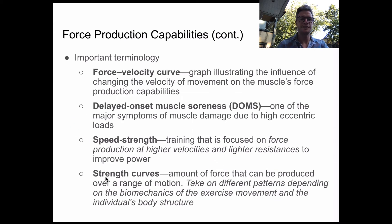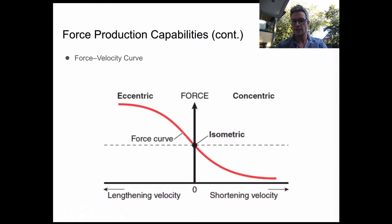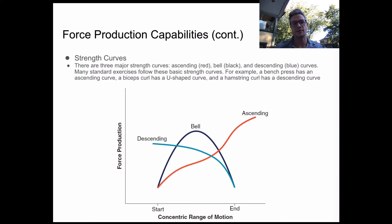Last point we're going to cover is our strength curves. What this covers is the amount of force that can be produced over that range of motion — whereas before we were talking about how much force can be produced over a range of speed, this is about how much force can be produced over a range of motion. With the strength curves, we tend to see about three different forms. Usually when talking about resistance training, the focus is on the concentric or shortening range of motion.